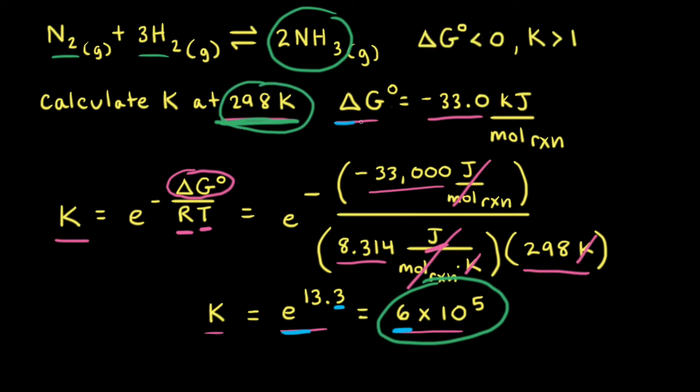Whenever delta G naught is negative, or delta G naught is less than zero, the equilibrium constant is greater than one, and products are favored over reactants at equilibrium.